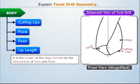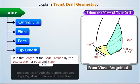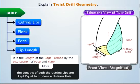The length of the edge formed by the intersection of face and flank is called the lip length. Note that the lengths of both the cutting lips are kept equal to produce a uniform hole.